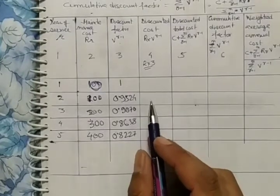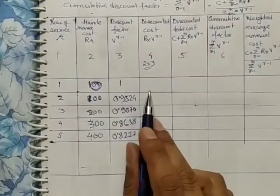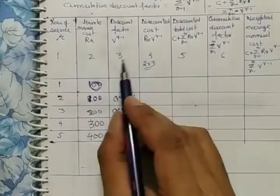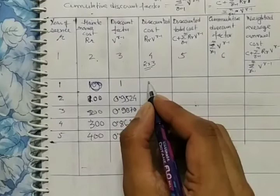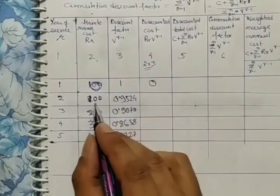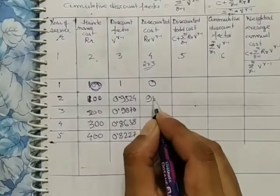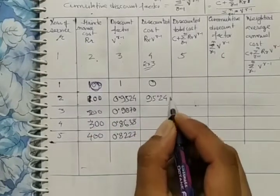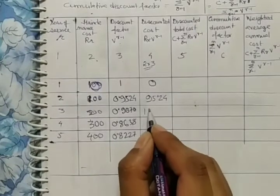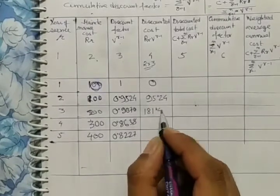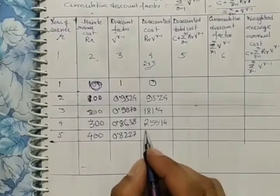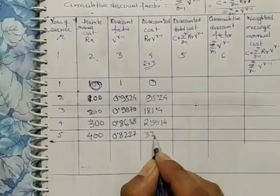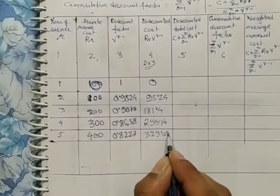We compute R_r multiplied by v^(r-1) for each year. For year 1: 0 × 1 = 0. For year 2: 100 × 0.9524 = 95.24. For year 3: 200 × 0.9070 = 181.4. For year 4: 300 × 0.8638 = 259.14. For year 5: 400 × 0.8227 = 329.08.